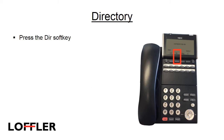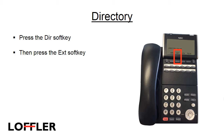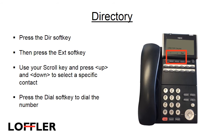To find extensions within your phone directory, press the directory soft key, then press the extension soft key. Use your scroll key and press up and down to select a specific contact. Press the dial soft key to dial the number.